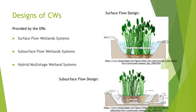Hybrid wetland systems incorporate surface and subsurface flow wetland characteristics. In a hybrid or multi-stage wetland system, there are different cells that are designed for different types of reactions that treat the wastewater of specific contaminants within each cell.